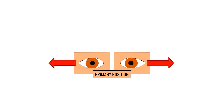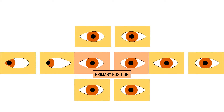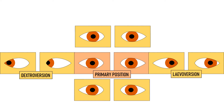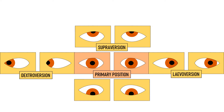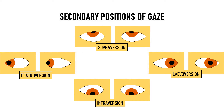If we move the eyes along the horizontal and vertical axis, we get secondary positions of gaze. When both eyes move to the right, it is called dextroversion — dextro means right, and version refers to binocular eye movements. When both eyes move to the left, it is called levoversion. When the eyes move superiorly, it is called supraversion, and when they move inferiorly, it is called infraversion. Dextroversion, levoversion, supraversion, and infraversion are all secondary positions of gaze.